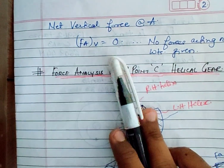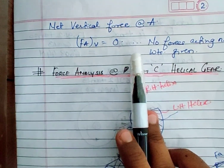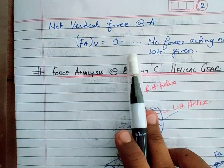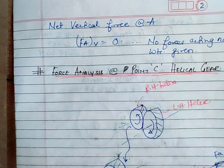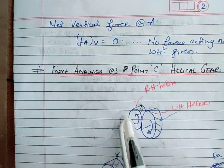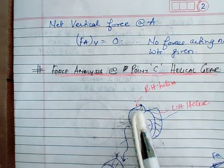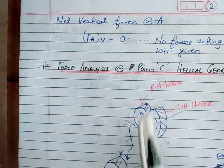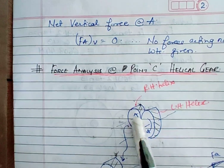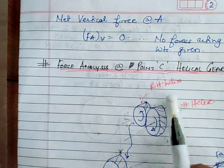Now we will do the force analysis of the helical gear mounted at point C. At point C there is a helical pinion, called a pinion because it transfers power to a larger gear. This pinion has a right-hand helix as mentioned in the problem, which means it will mesh with a left-hand helix gear.